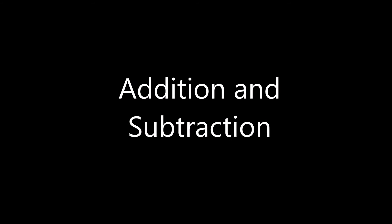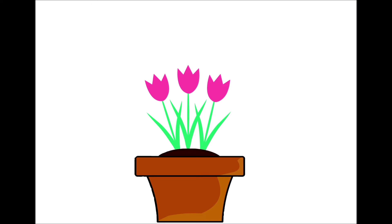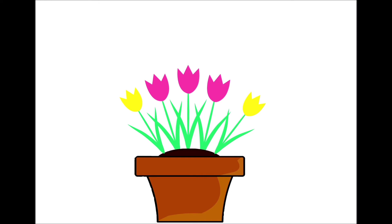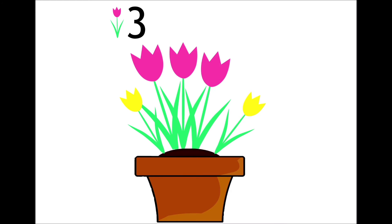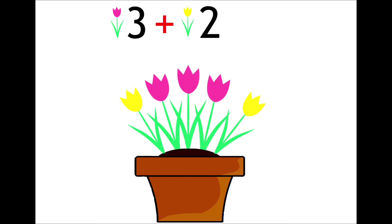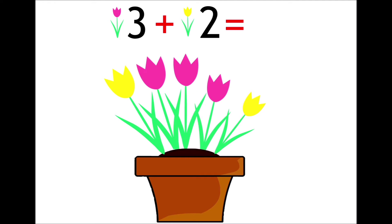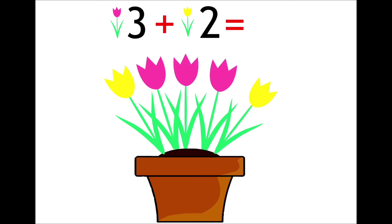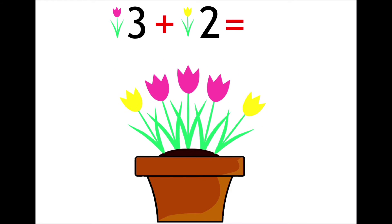Let's do some plus and minus. First, we have three pink tulips. Let's count: one, two, three. Now let's put more tulips. Let's add two yellows — one, two. Now there are three pink tulips plus two yellow tulips. How many tulips are there in the pot? Let's count: one, two, three, four, five. Very good! There are five tulips in the pot.